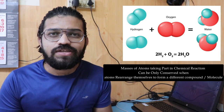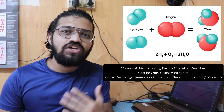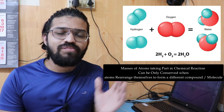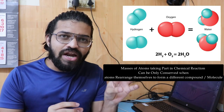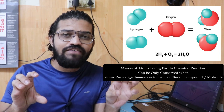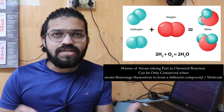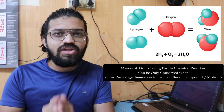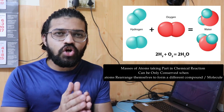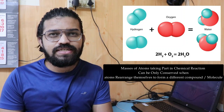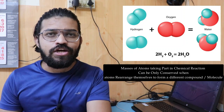The law of constant proportions states that two different elements have atoms with different properties. For example, water (H2O) consists of two hydrogen atoms and one oxygen atom. Each hydrogen and oxygen atom has different atomic mass, structure, and properties. By referring to these two laws, Dalton postulated his six basic points.